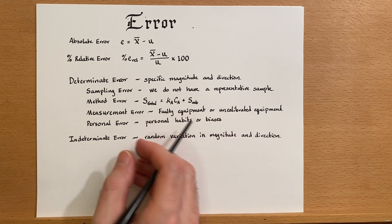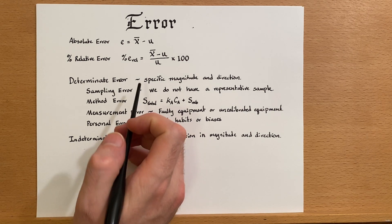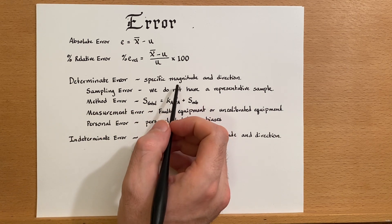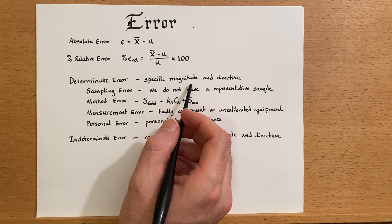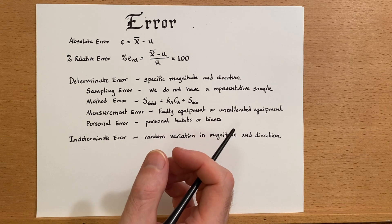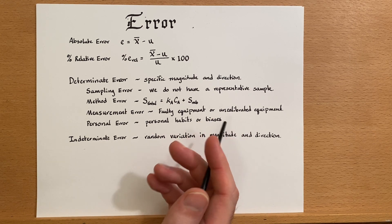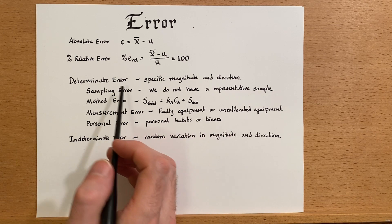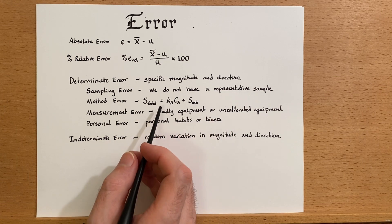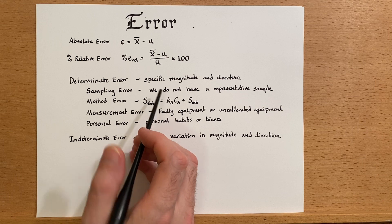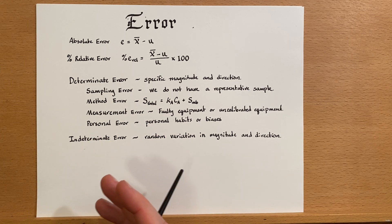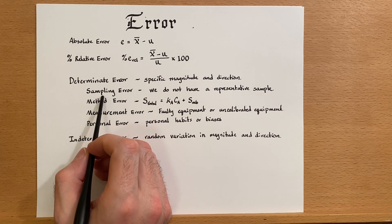If we measured something and it measured 11 when it was supposed to measure 10, that's an error in the positive direction and it's a 10 percent error. If we measured another sample that was supposed to measure 100 but instead it measured 110, that's still a 10 percent error. Both of these cases would be examples of determinant error. They're both in the same direction and they have a specific measurable quantity.